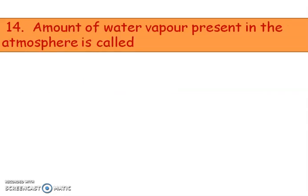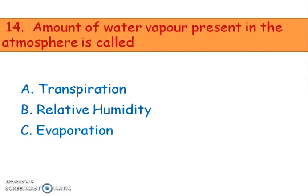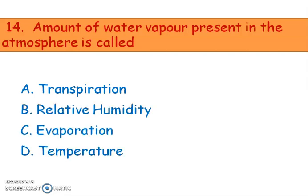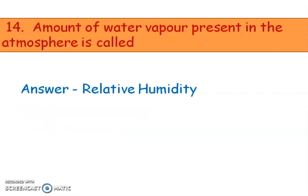Next, question 14: the amount of water vapor present in the atmosphere is called — options are transpiration, relative humidity, evaporation, and temperature. The right answer is option B, relative humidity.